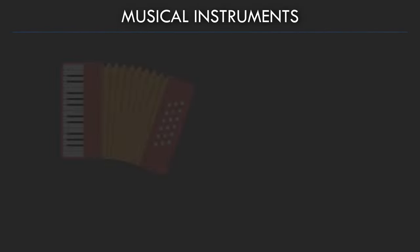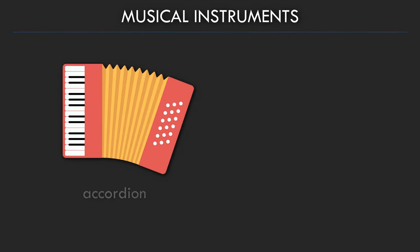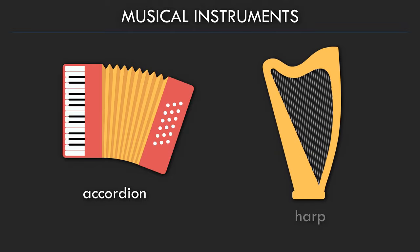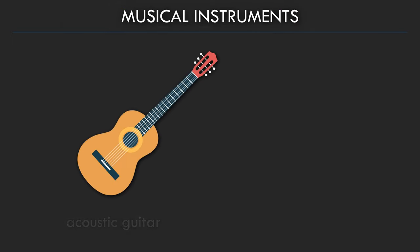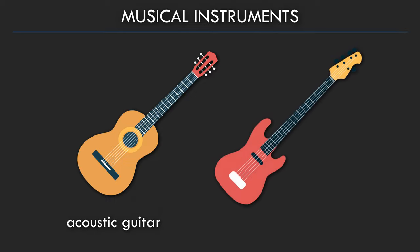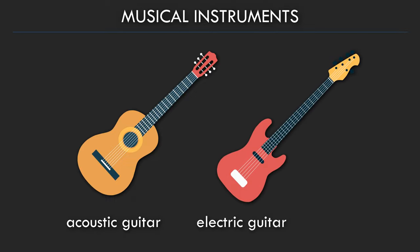Names of musical instruments in English. Accordion. Harp. Acoustic Guitar. Electric Guitar.